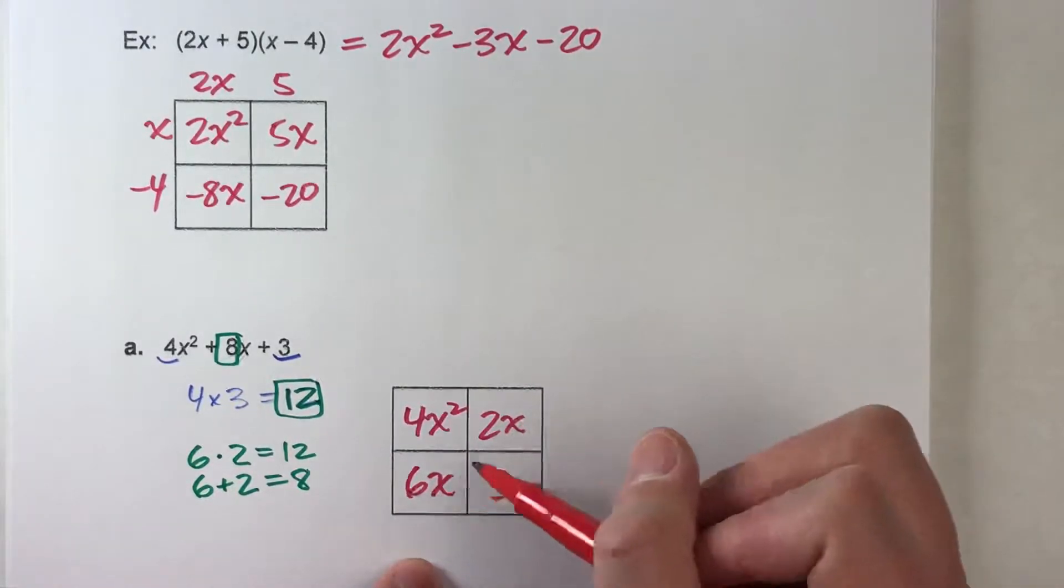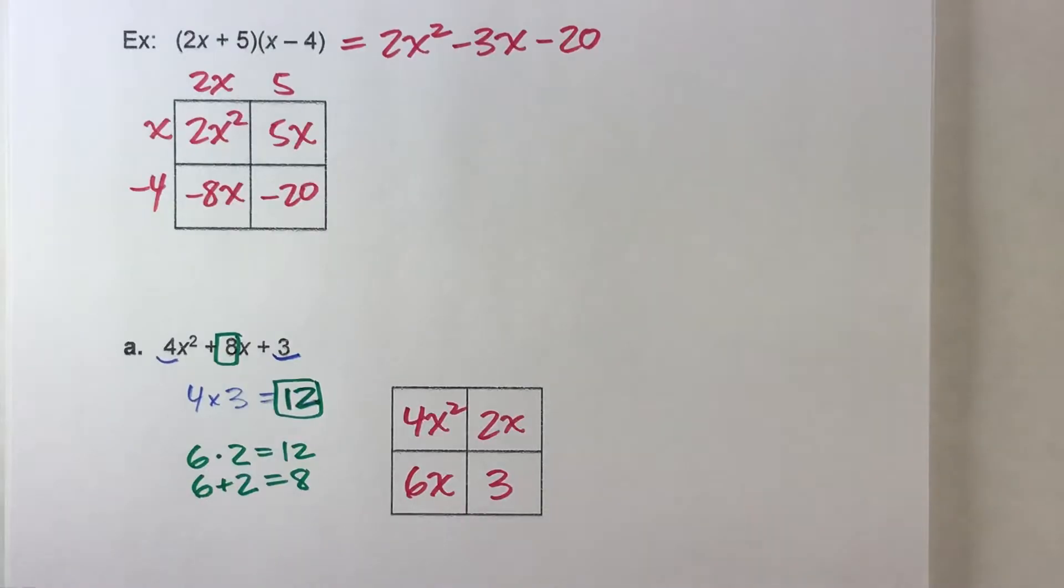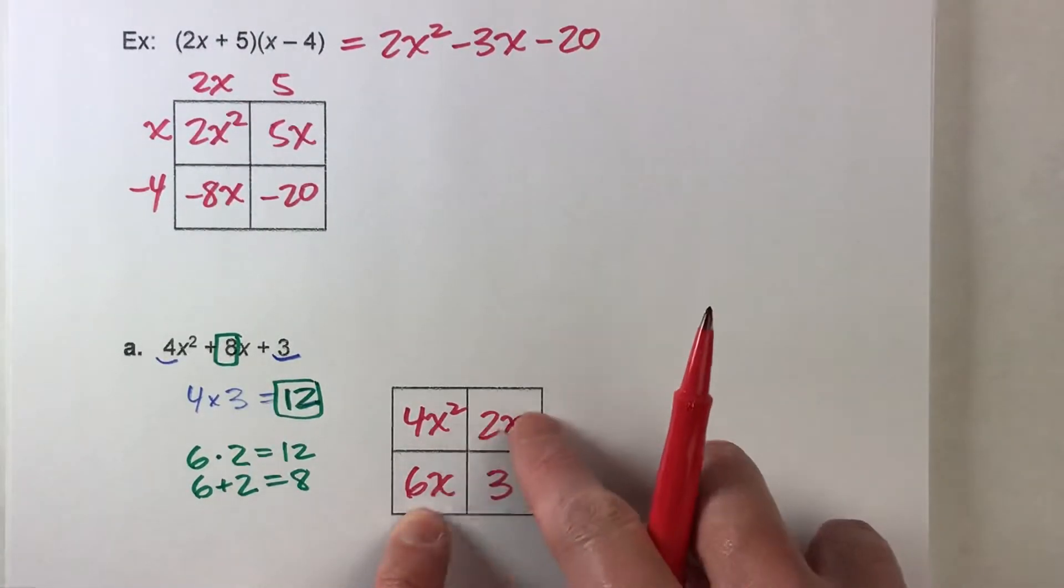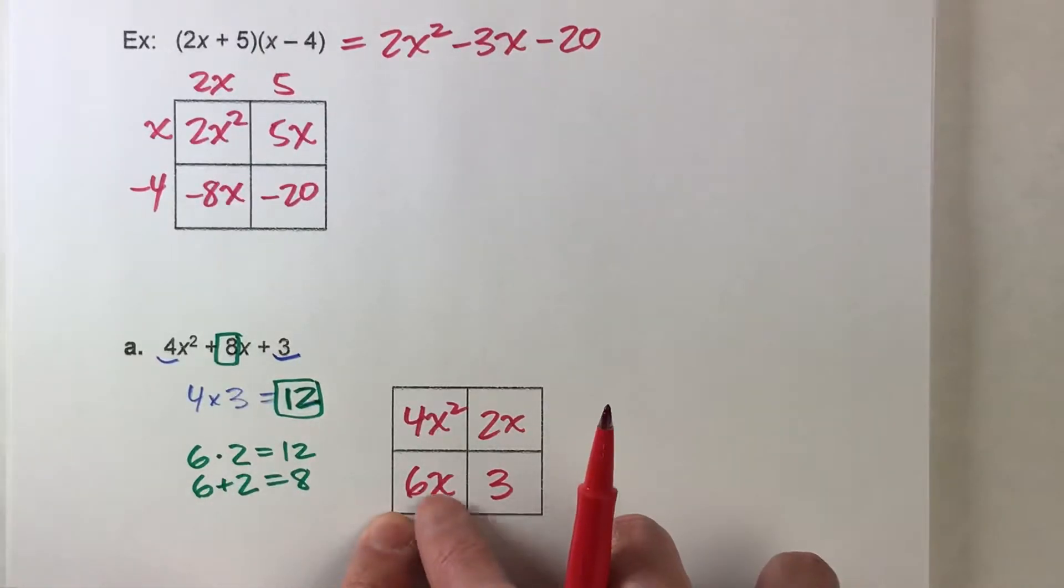And it doesn't matter which one goes where. Because either way you place it, it's still going to work. But notice, 6x plus 2x equals 8x, but 6 times 2 is going to get me 12. That's important.